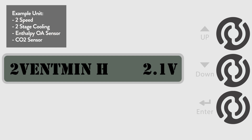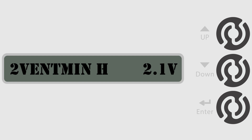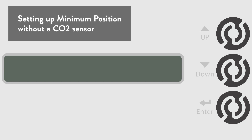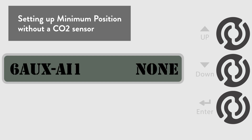Our objective of setting up a 2-speed unit with 2-stage cooling using an enthalpy outside air sensor and a CO2 sensor is now complete. However, there are a few typical settings to review. If we didn't have a CO2 sensor, the 6 AUX AI1 menu would need to be set to its default of none. In this case, we could just adjust the minimum position settings. You can leave these at the default settings or make changes, which we will do. In this example, we are still using a 2-speed unit, so we will have to adjust the low and high speed settings in the 8 run state menu.